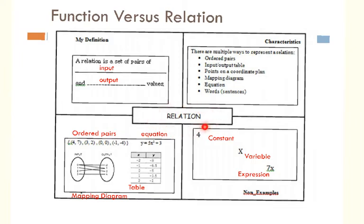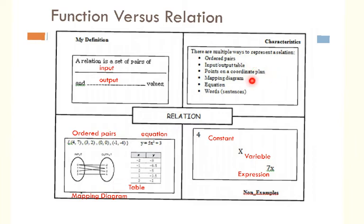The word we're looking at is relation, and the definition is: a relation is a set of pairs of inputs and output values. Examples include ordered pairs (x and y pairs), an equation, a table, and a mapping diagram. Characteristics include multiple ways to represent a relation: ordered pairs, input-output table, points on a coordinate plane, mapping diagram, equation, and words or sentences. Things that are not relations include a constant like 4, a variable like x, or an expression like 7x.